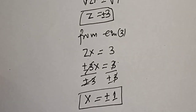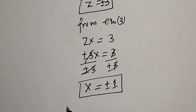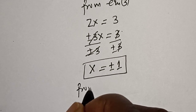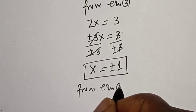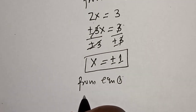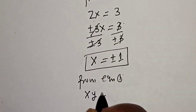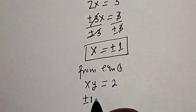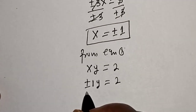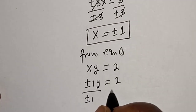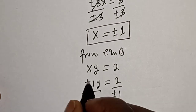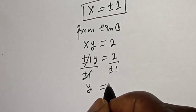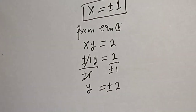That is the value of X. Now, we also need the value of Y. From equation 1, we have X·Y is equal to 2, and X is plus or minus 1. Dividing both sides by plus or minus 1, this cancels, giving Y is equal to plus or minus 2.